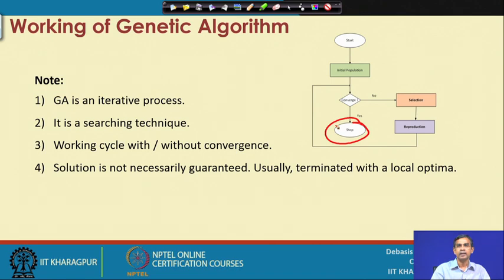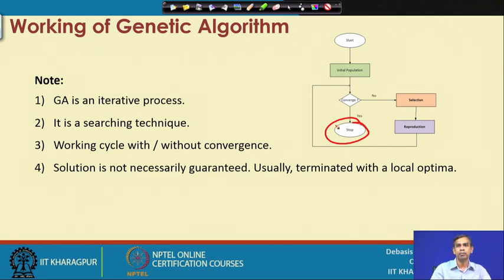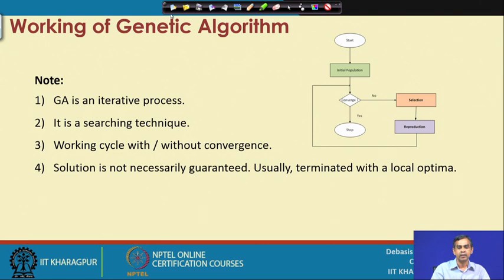A near-optimum solution is sometimes called local optima, while a guaranteed optimum solution is called the global optimum. There are multiple minima, and the global minimum is the guaranteed solution. Sometimes genetic algorithm can converge into a local optima, which may still be sufficient for problems that cannot be solved using traditional approaches. Genetic algorithm essentially does not always give the correct solution but rather a near-correct solution.